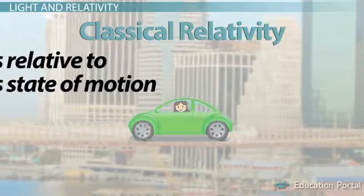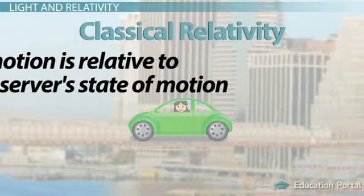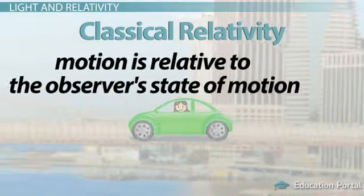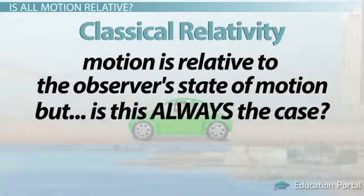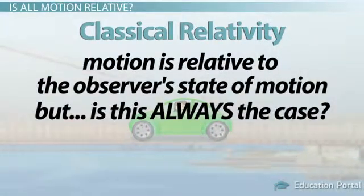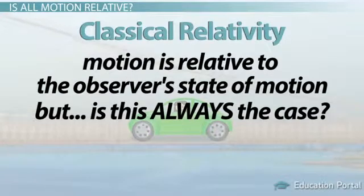Now classical relativity tells us that motion is relative to the observer's state of motion. But here's a question. Is all motion relative to the observer's state of motion, as classical relativity would suggest? Well, it appears the answer is no.